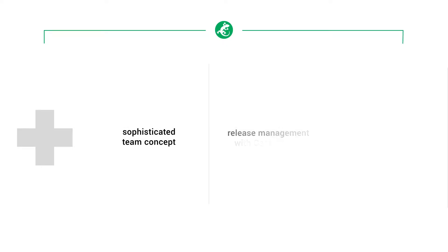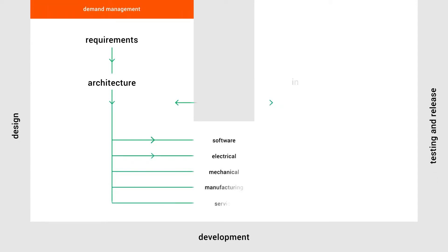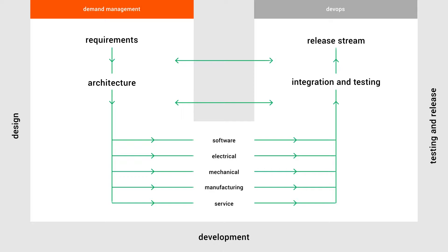Complex product development projects can be efficiently managed using Codebeamer's sophisticated team concept, release manager, and collaborative features. Multiple parallel life cycles of software development, hardware engineering, and service innovation may be conveniently and efficiently managed using Codebeamer. Integrating ALM and PLM, as well as service life cycles, facilitates the development of complex products for the Internet of Things.